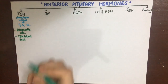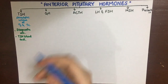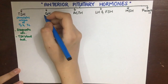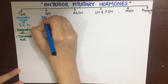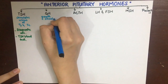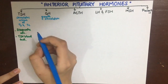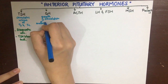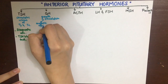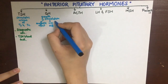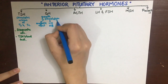Next, the growth hormone secreted by the anterior pituitary has three main effects: one is its anabolic effect on muscle, second is its role in positive nitrogen balance, and thirdly its role in fat utilization.